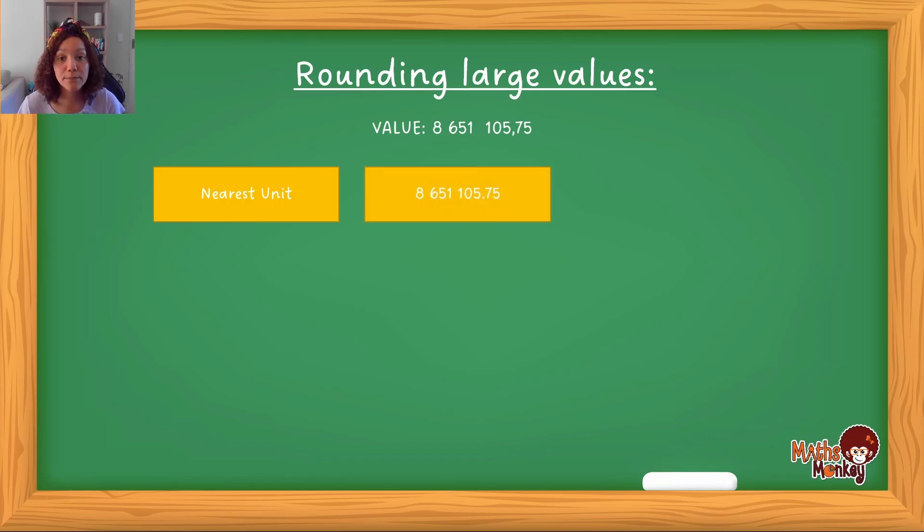So this number is 8,651,105.75. If I'm going to round this off to the nearest unit, that just simply means the nearest whole number, which means I shouldn't have any decimals. The way you will do that is you will draw the line to where you actually want to round off to. The value after the line, if this value is 5 or greater, then the number in front of the line will go up 1. If this value is less than 5, then the number will remain the same. In this case, 7 is greater than 5, so when I round this value off, I will round it off to 8,651,106.